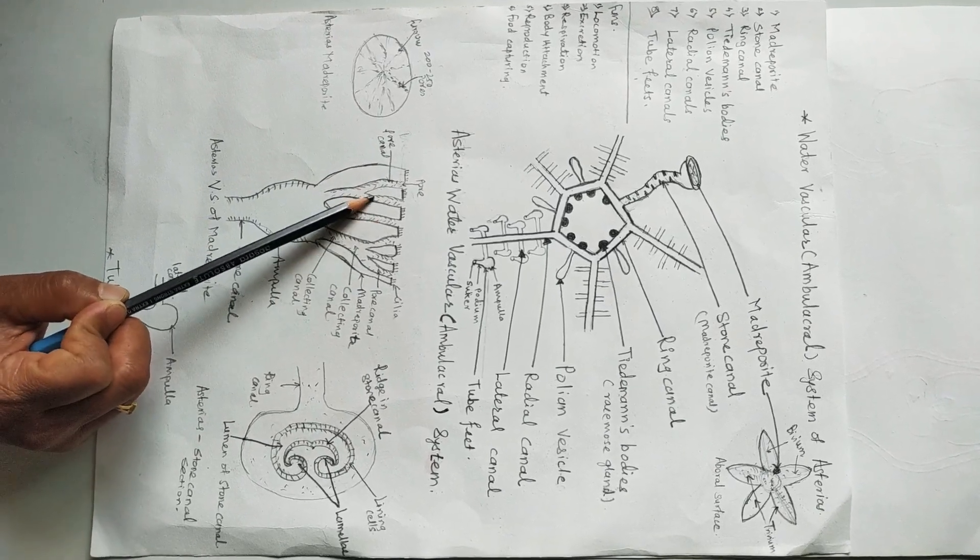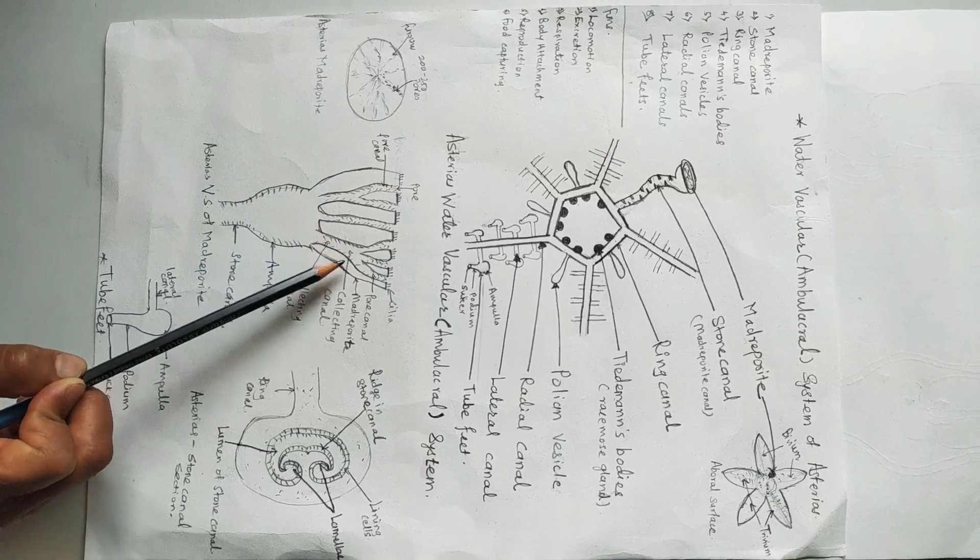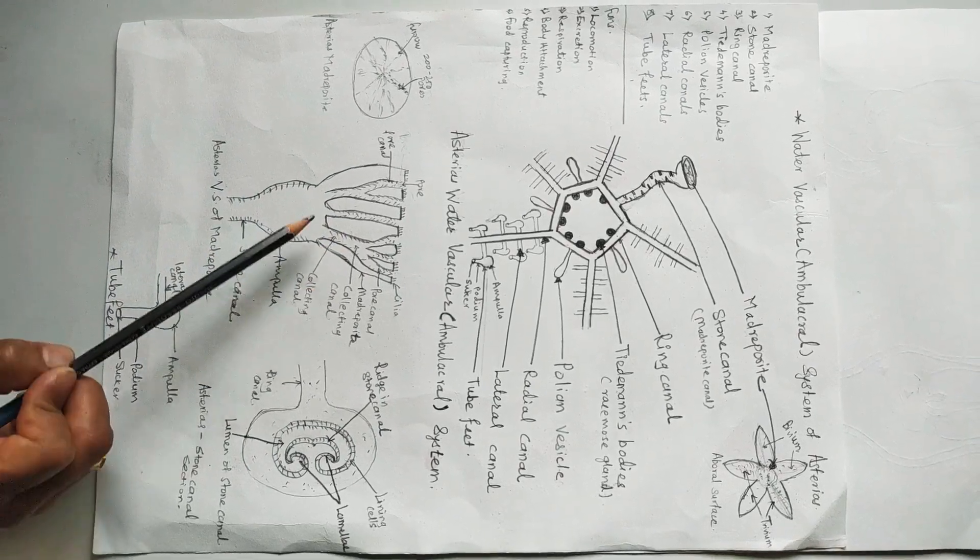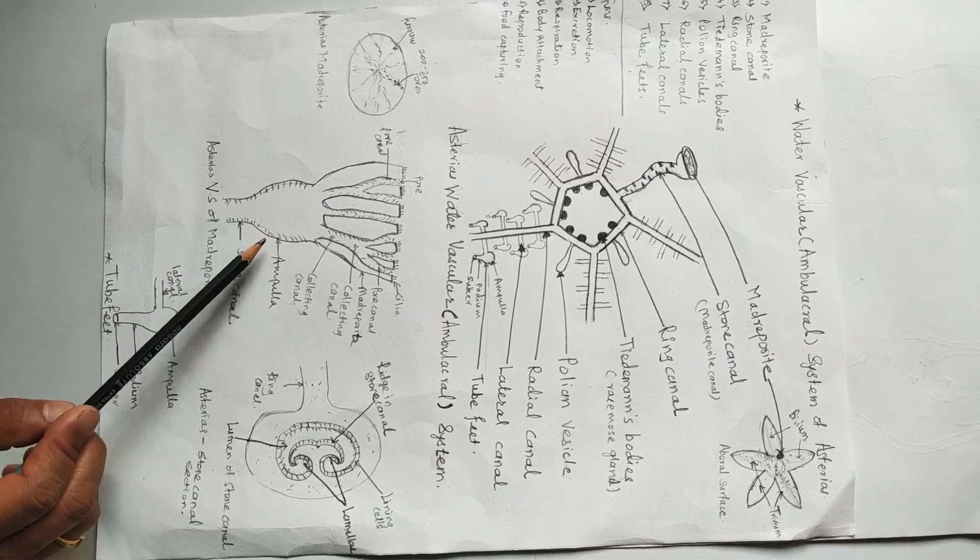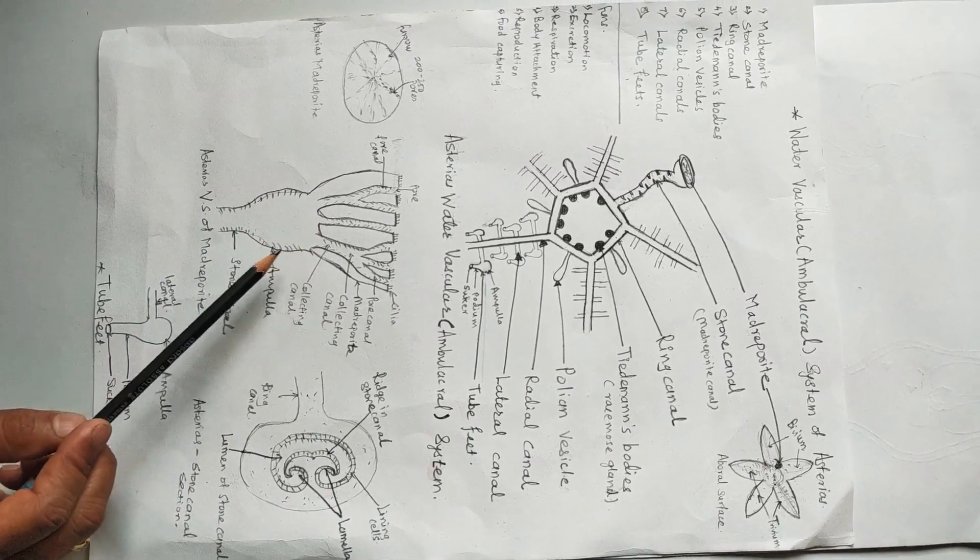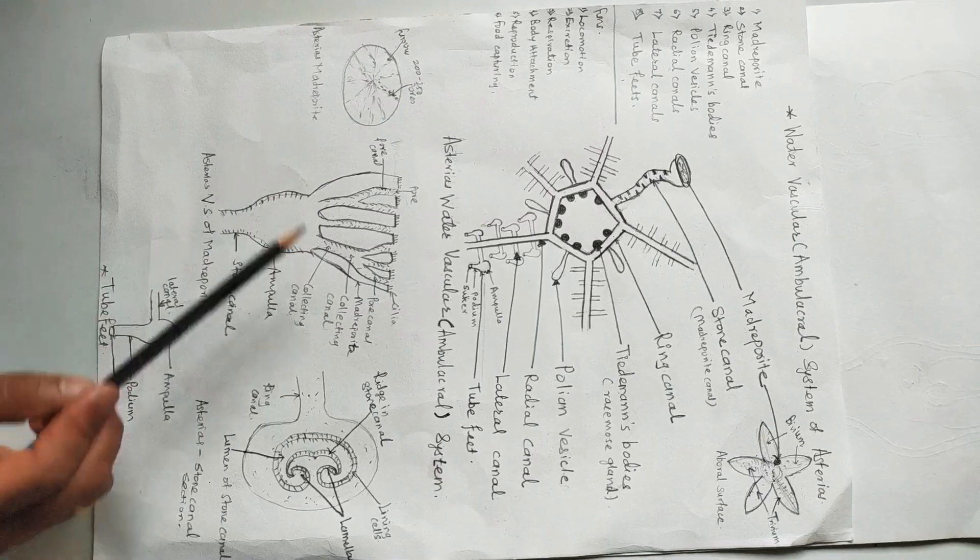There are many pore canals that unite to form a collecting canal. The latter in turn open into a small sac-like structure that is called an ampulla which is just lying below the madreporite.